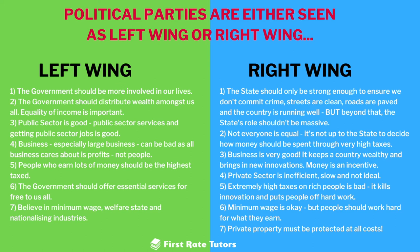Another element of right-wing beliefs is that private business and the private sector is good — this is what keeps a country wealthy and brings in new innovations. A lot of innovation happens when there is money as an incentive; this is how we witness new technology and new ideas. If the state takes over different types of businesses, this can kill the incentive to innovate. So it's not down to the state to nationalise businesses — they should be in private hands to optimise profits and bring in more innovations. From the right-wing perspective, the public sector is inefficient and slow, and imposing extremely high taxes on rich people kills innovation and puts people off hard work.